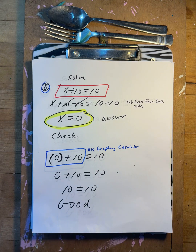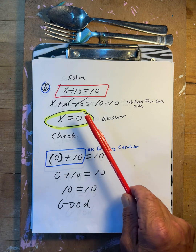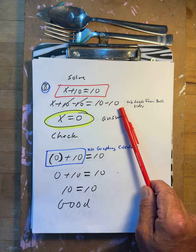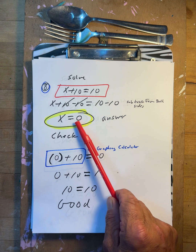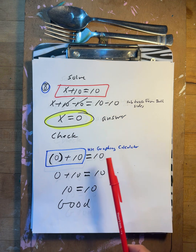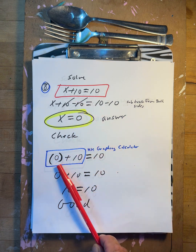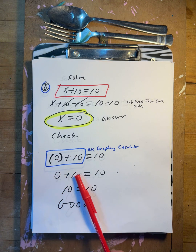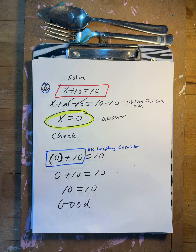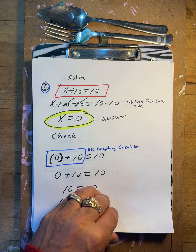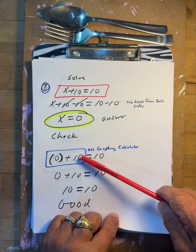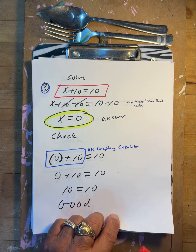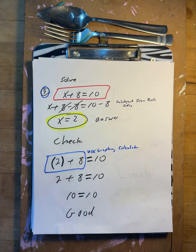x plus ten equals ten. Minus ten, minus ten. So x equals zero. Does that work? Put zero in there: zero plus ten is ten. Yes, that works. Now x plus eight equals ten — minus eight, minus eight.